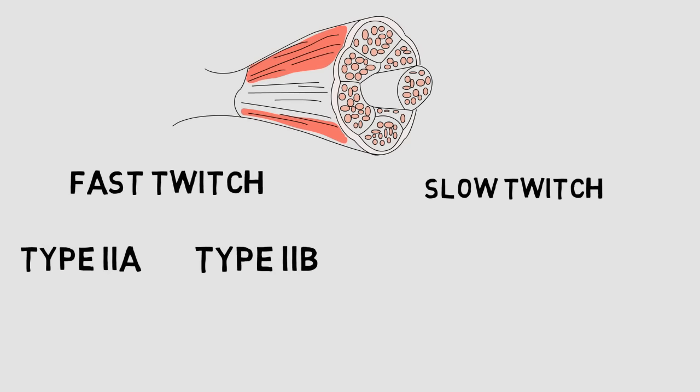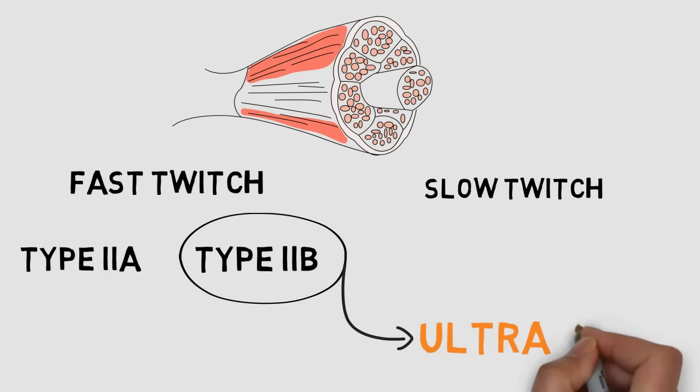And the one we care about is called type 2B fibers. The best way to think about your 2B fibers is ultra-fast twitch.